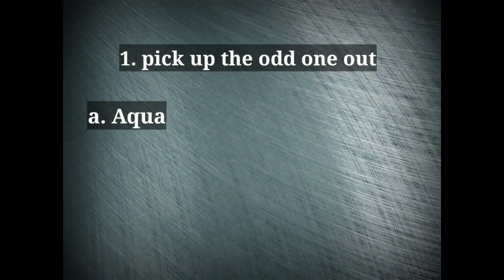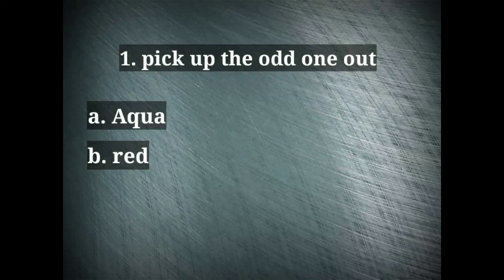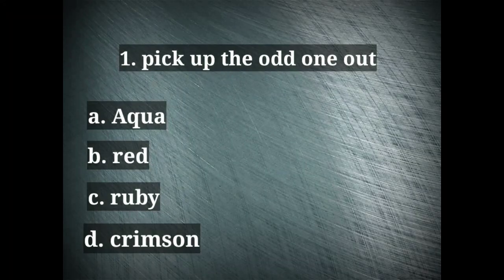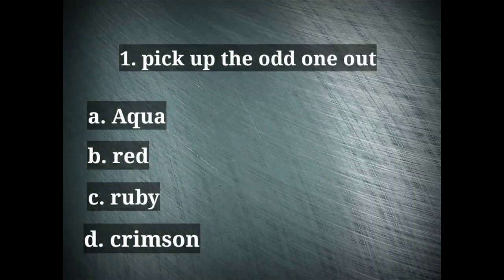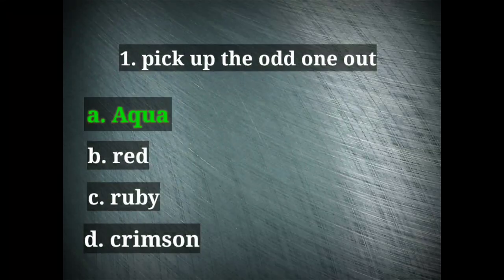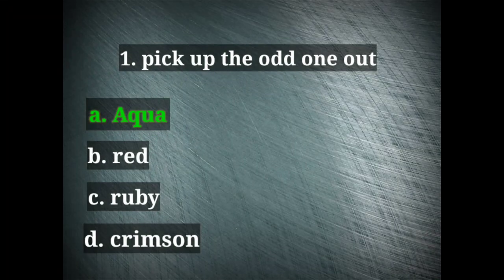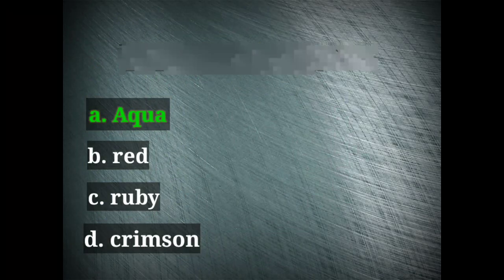First question is: pick the odd one out. Options are aqua, red, ruby, and crimson. The right option here is aqua. It is because aqua is in blue shade and all the others are red shade, so that is the odd one here.